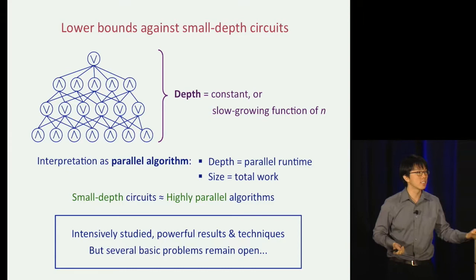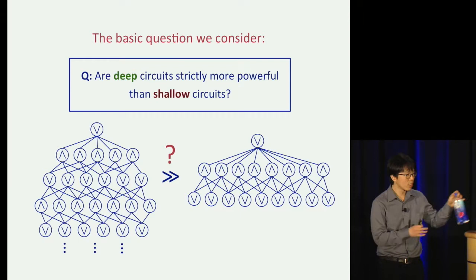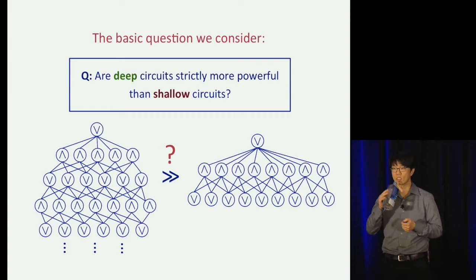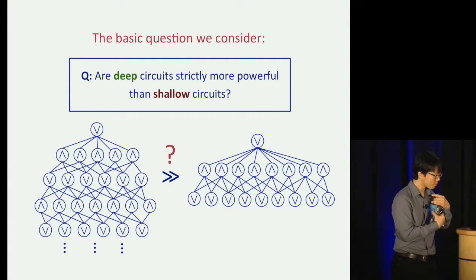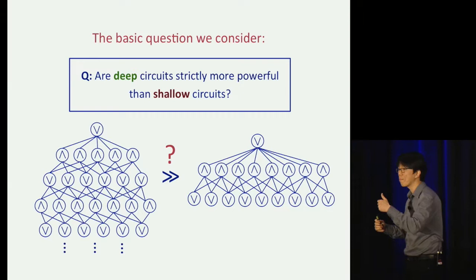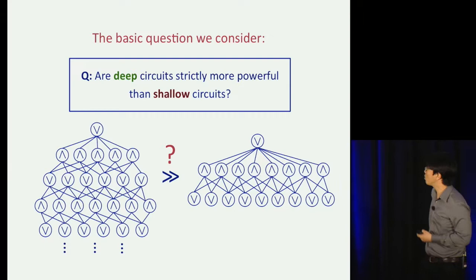The question we consider is: are deep circuits strictly more powerful than shallow circuits? Say a depth-100 circuit versus a depth-10 circuit. What if I allow the shallow circuit to have more gates — can I make up for a lack of depth with a slight increase in size? The first result gives a very sharp, precise answer: just one extra layer of circuit depth buys you exponentially more computational power in a very strong sense.